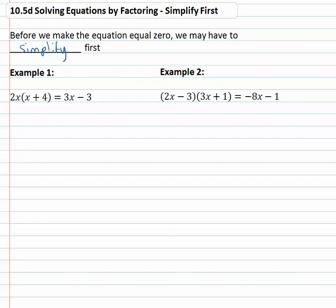We can't really make it equal to zero yet because of the multiplication on the left side. So we have to do a little simplifying, we're going to distribute the 2x through the problem. That's going to give us 2x squared plus 8x equals 3x minus 3.